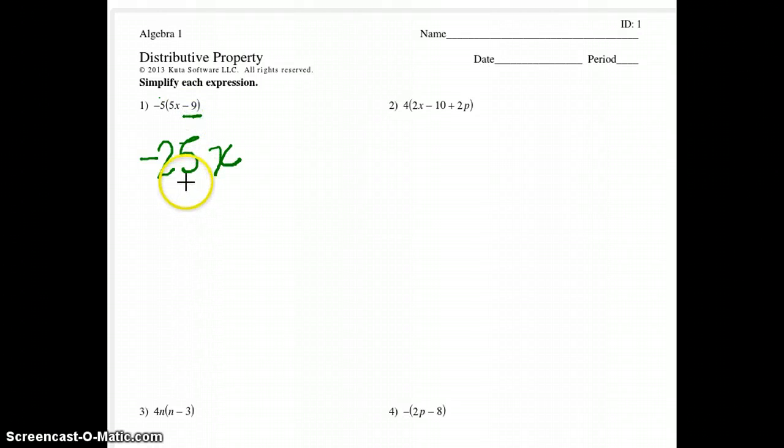Here's the second component. This is a negative 9. We have a negative 5 times a negative 9. 5 times 9 is 45. Negative times a negative is a positive. We end up with negative 25x plus 45. Very straightforward.